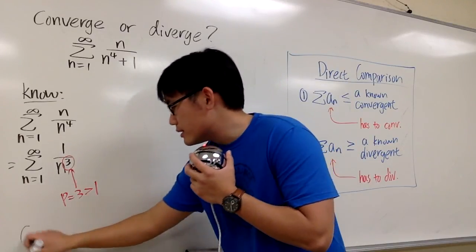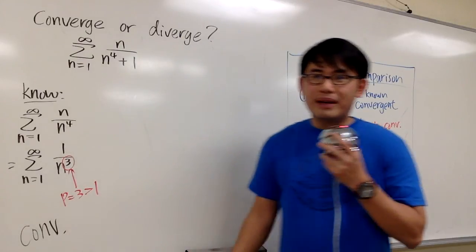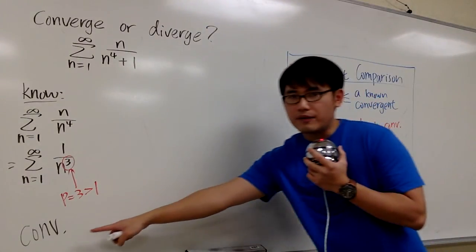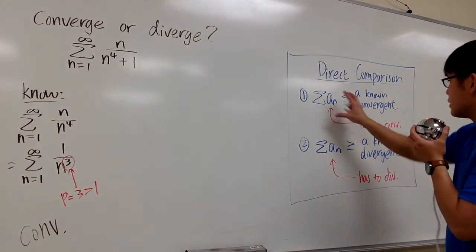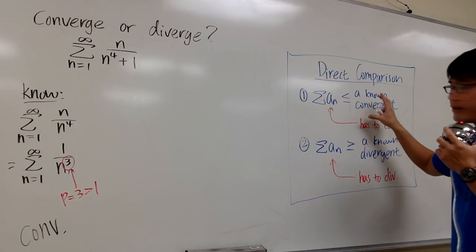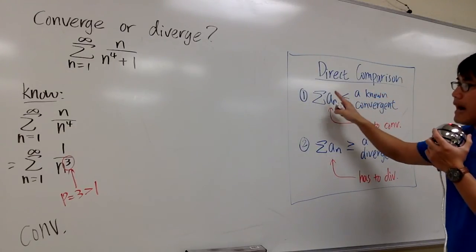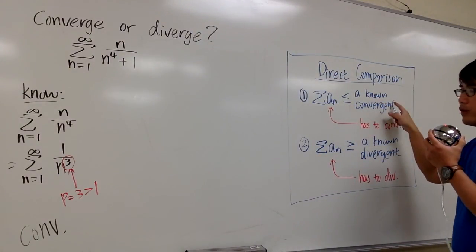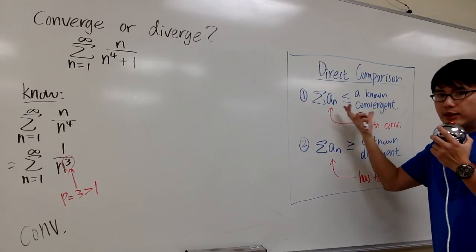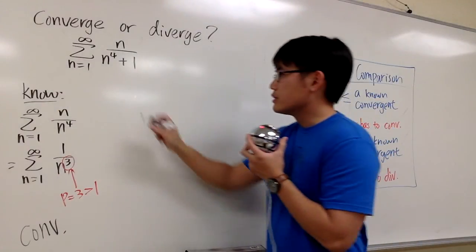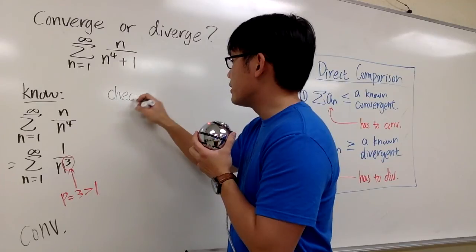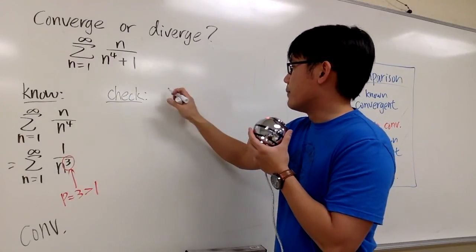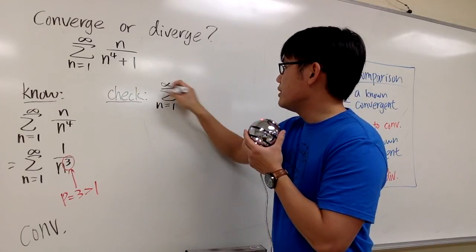So namely this series converges by the P test. Now, because we come up with a convergent, I'm looking to set up my first situation. I want to set my series to be less than or equal to a known convergent, and if I can check this inequality holds, then I can draw conclusions. So let's go ahead and do that. This will be the check.